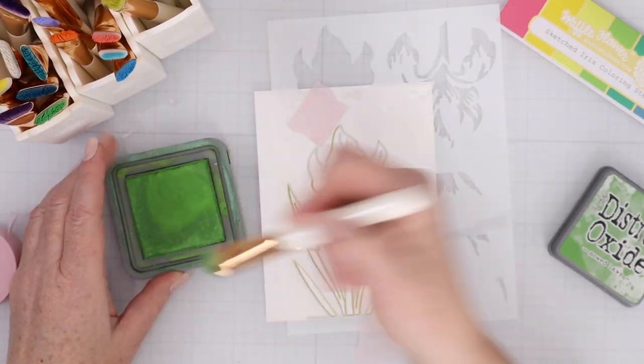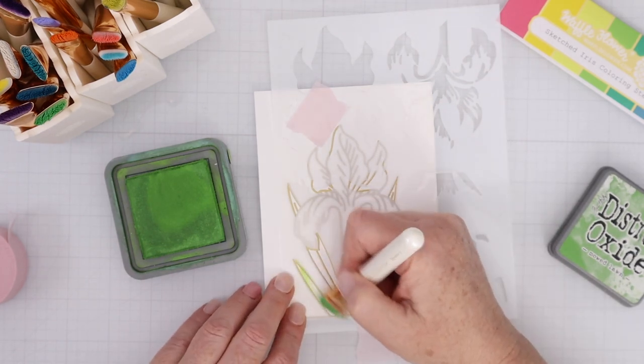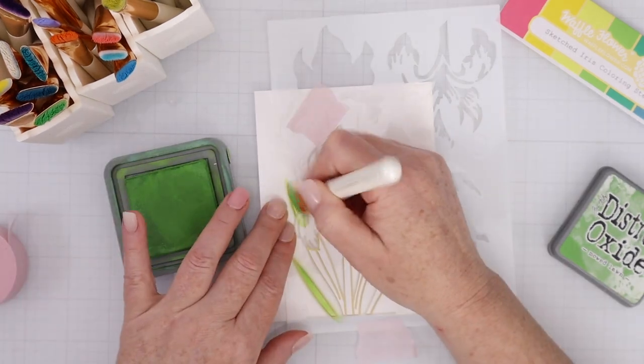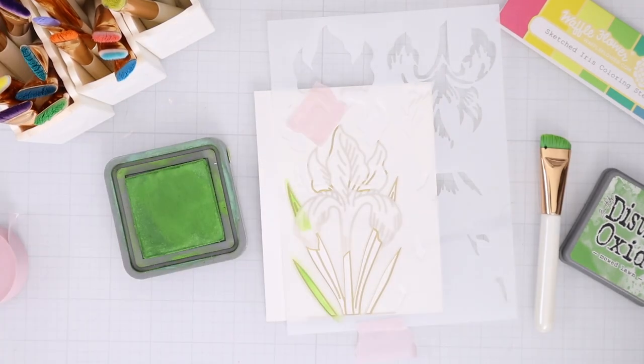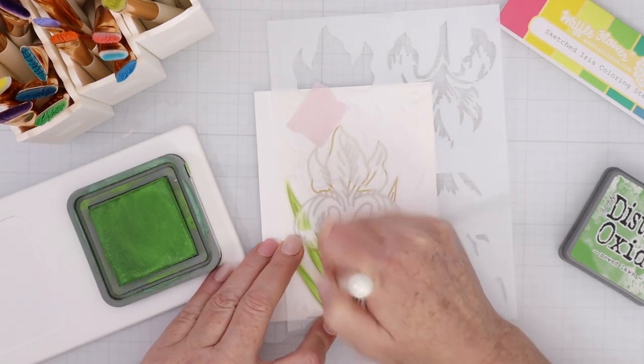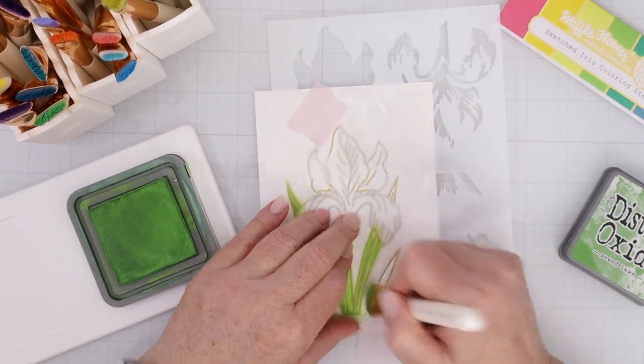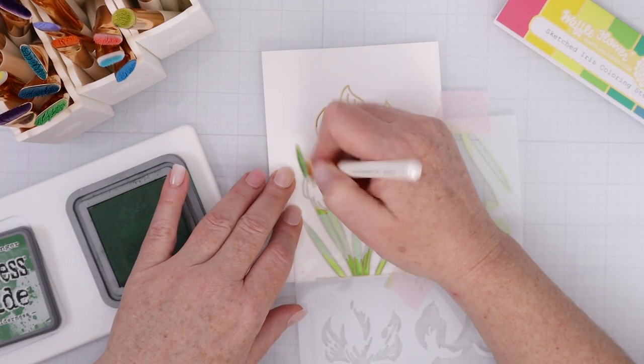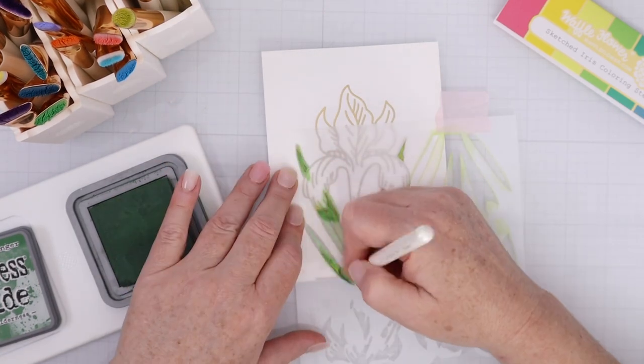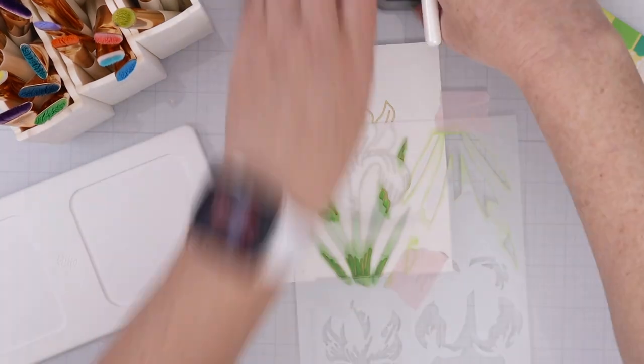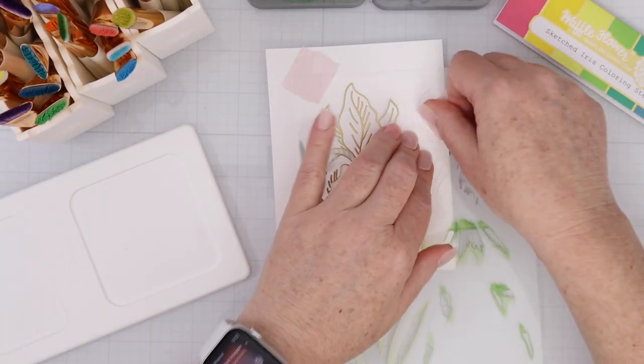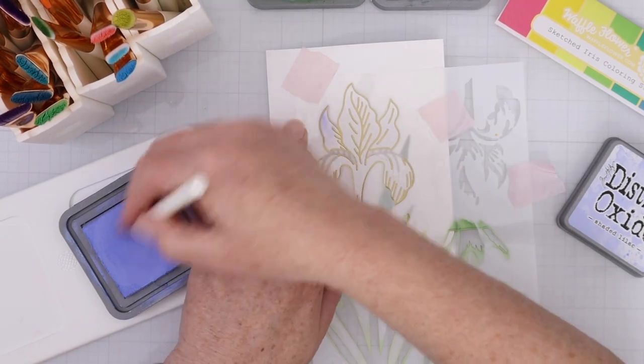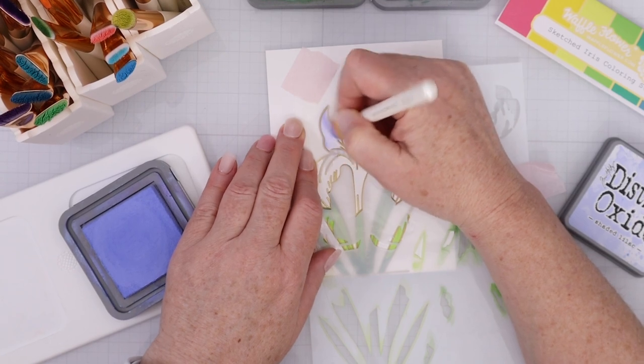Now, the stencil is a single stencil, but it has four different layers included on that stencil. So there's numbers, and I, of course, started with leaves instead of starting with number one. I don't know why I can't follow the rules, but I always just start where my brain is thinking first. So I am going to color in the leaves first with a waffle flower shader brush and some distress oxide ink in mowed lawn. And you can see that I'm holding the ink in place with my waffle flower ink holders, and I have all my brushes up above to the left in those little holder cups. So all I am doing is moving the stencil around to do the different areas and the different layers, and I'm holding them in place with some pixie tape.